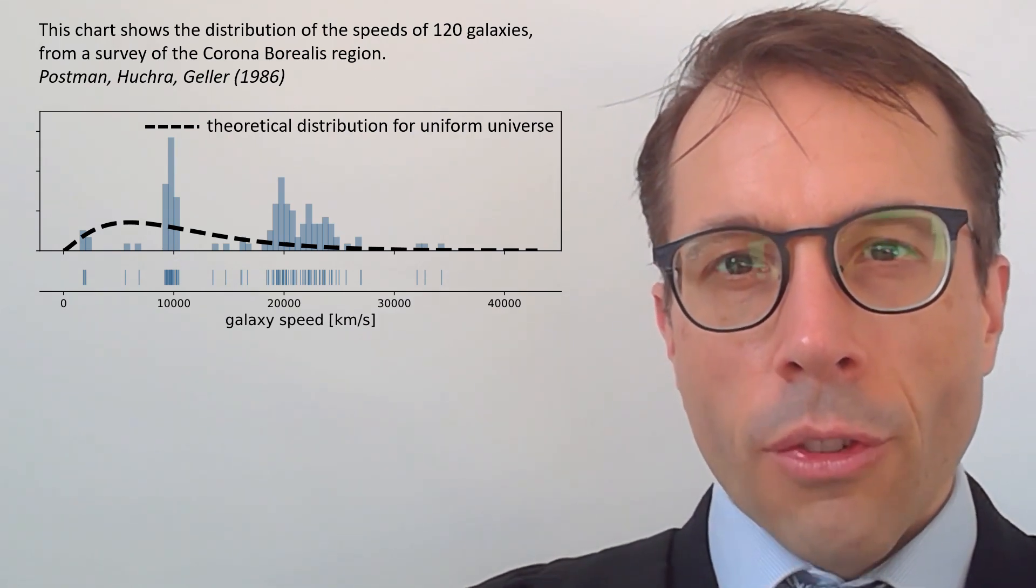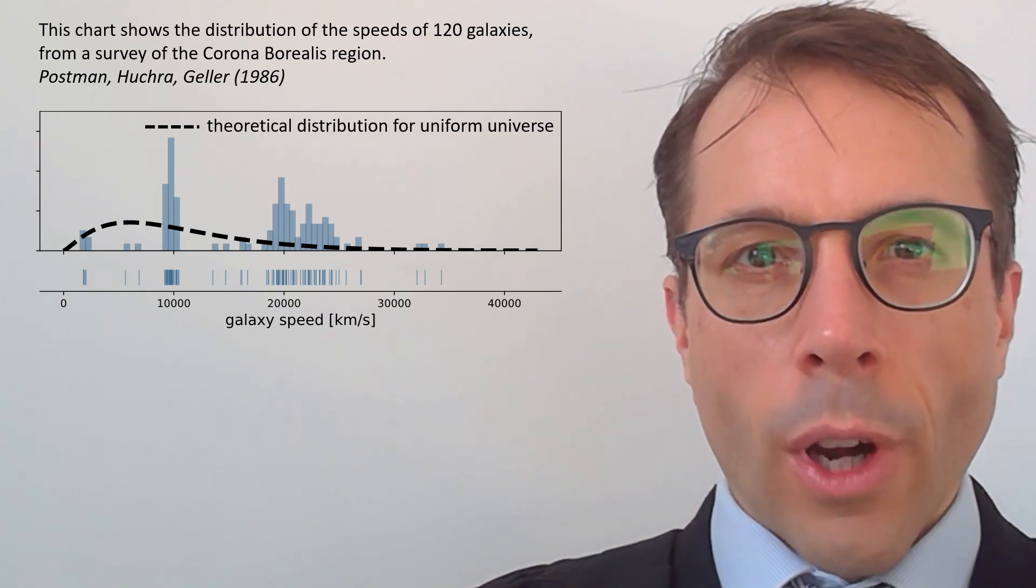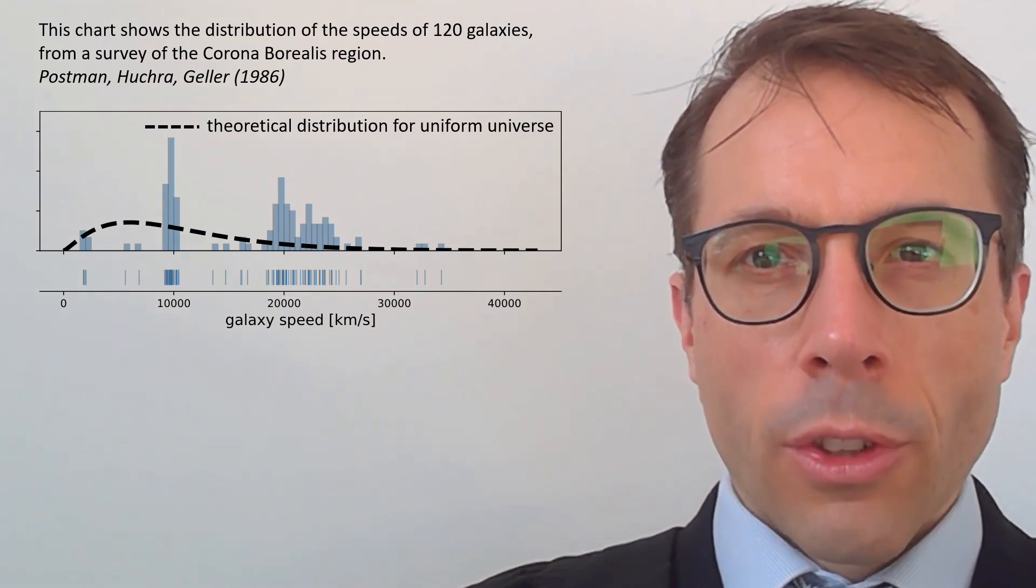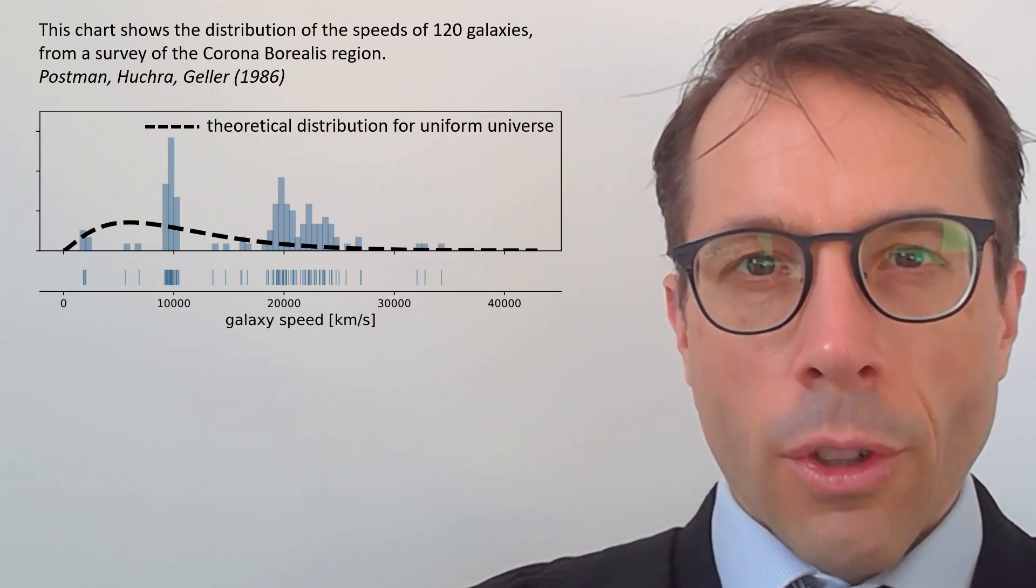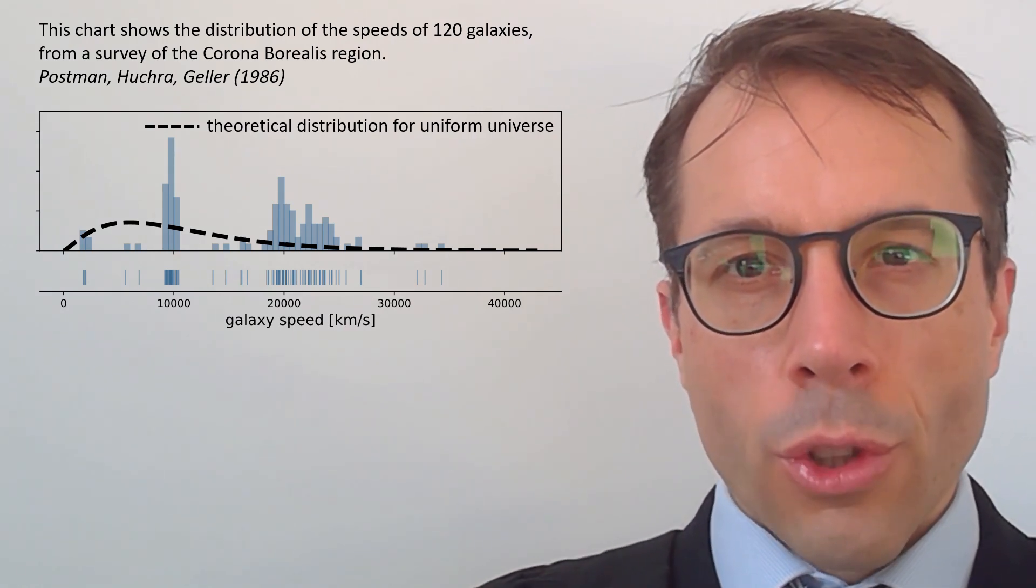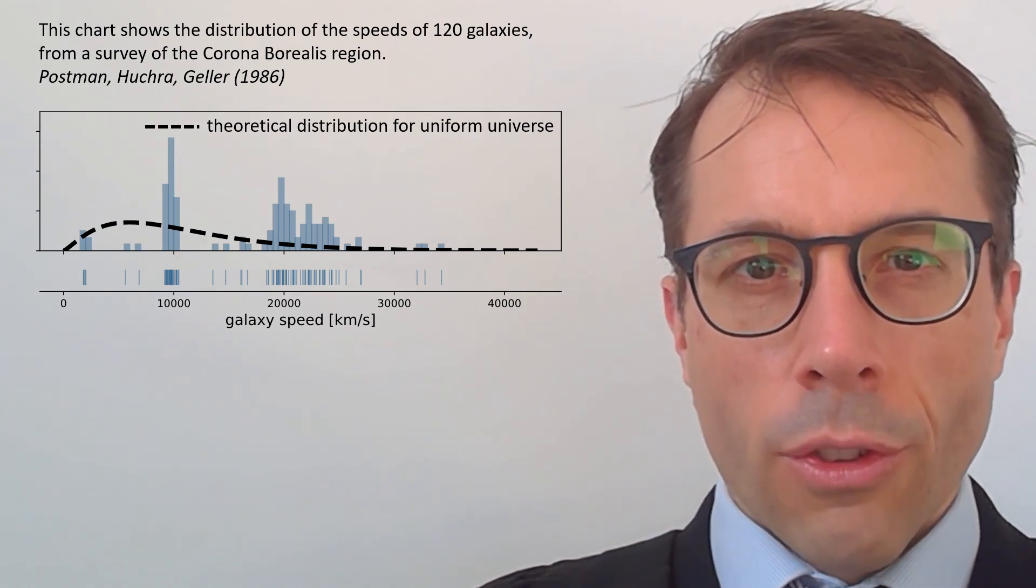But if the universe is made up of filaments of galaxies with great big voids in between, then when we plot a histogram of galaxy speeds we'll see the speeds clustered and that's what the histogram of this dataset suggests. So the theoretical distribution for a uniform universe doesn't match this histogram.